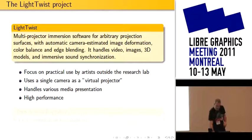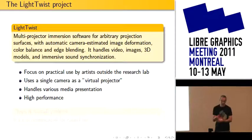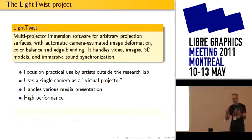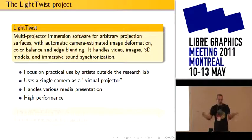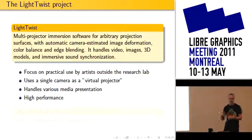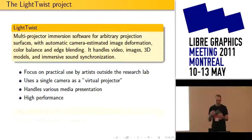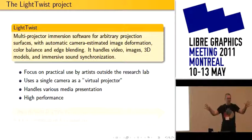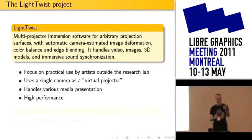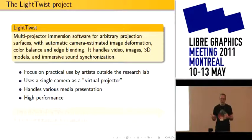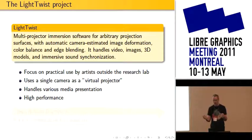So what is Light Twist? It's a multiprojector immersion software that tries to allow you to project with many projectors on any surface you want. The key of this system is that you don't align by hand — you use a camera, and the camera takes pictures of the screen and aligns everything automatically. The system supports up to 12 projectors, synchronized by network. It's a pretty complicated setup — very nice, but it's complicated.